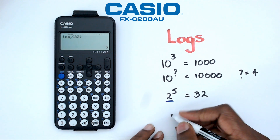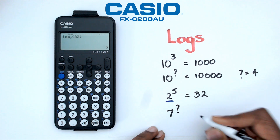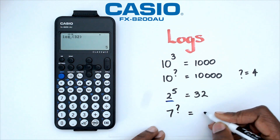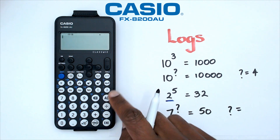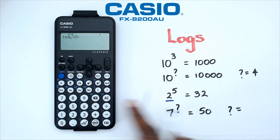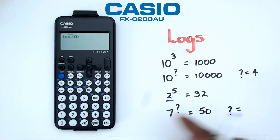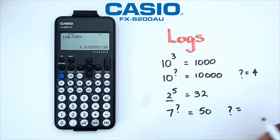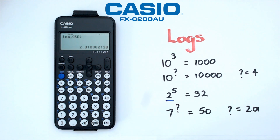Let's try another question. We're trying to figure out what is 7 to the power of what equals 50. To do this, use the log button with two boxes, put the base as 7 and the number as 50, and this gives us a power of approximately 2.01.